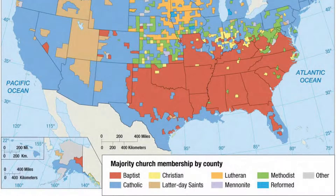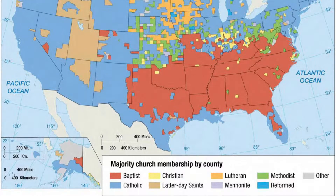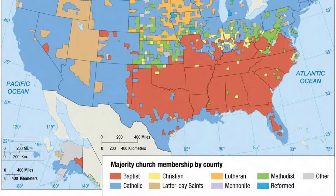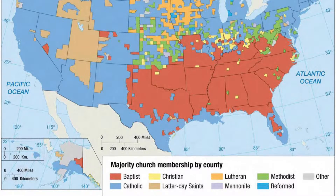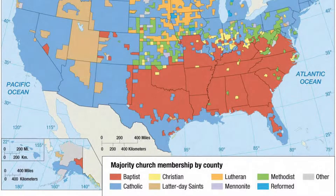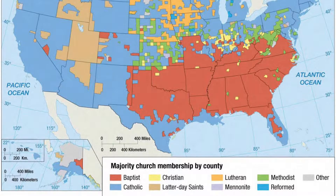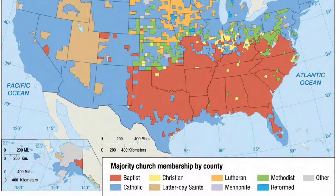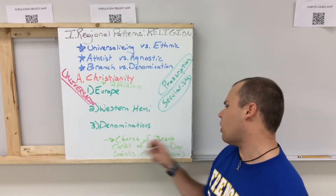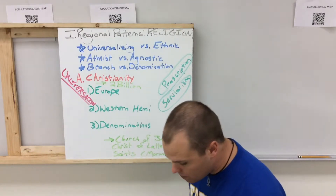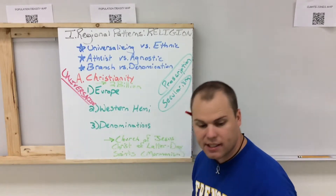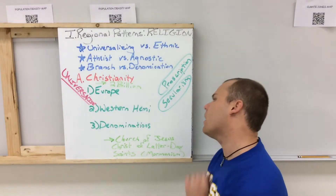Looking at a map of the United States, you've got Baptists in the South, Methodists just above that, Lutherans above that as well, Mormons in the West, and the Amish in Pennsylvania, Ohio, and Indiana. Christianity is a proselytizing type of religion, meaning it's trying to convert people. The Church of Jesus Christ of Latter-day Saints — Mormonism — is clustered in Utah and surrounding states, with 3% of Americans today being Mormons.